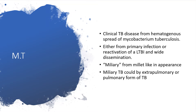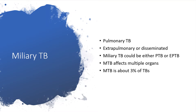Or it could be affecting the lungs and still appear with millet-like appearance, forming Miliary TB of the lungs — the pulmonary form of Miliary tuberculosis. Most of the time, affected individuals will present with pulmonary tuberculosis, involving cough, sputum production, fever, night sweats, weight loss, and the rest.